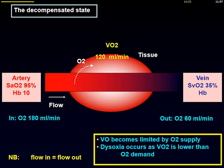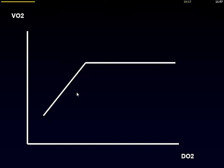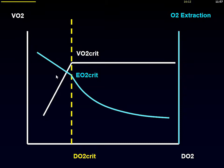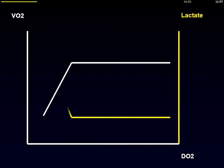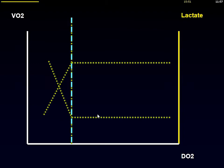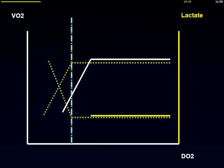We face the problem of VO2 being dependent on DO2. If you look at extraction, it will still increase first, but the extraction increase is not enough to compensate for the huge decrease in oxygen delivery at that stage. If we look at the cells, lactate will rise sharply, making it a very good indicator of whether cells are receiving enough oxygen. Importantly, in some conditions — particularly sepsis — there is a shift to the right of the critical point where oxygen consumption becomes dependent on oxygen delivery.